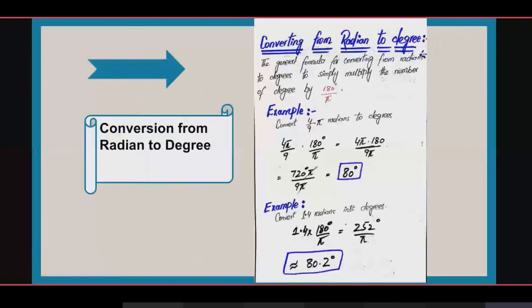The radian formula in terms of π: one radian is equal to 180 degrees divided by π. To convert from radian to degree, we simply multiply the number of radians by 180 degrees divided by π. For example, convert 4π radians to degrees: we multiply 4π by 180/π and we get 720 degrees. The second example: convert 1.4 radians into degrees — we multiply 1.4 by 180/π and we get approximately 80.2 degrees.